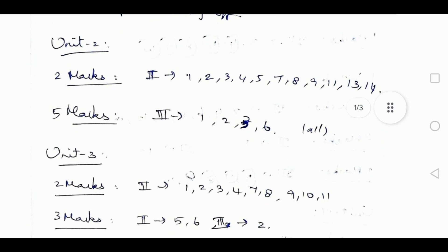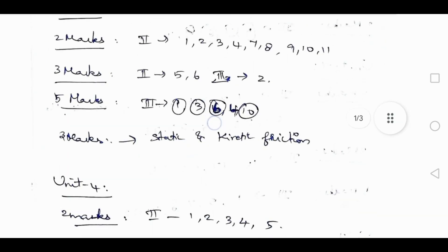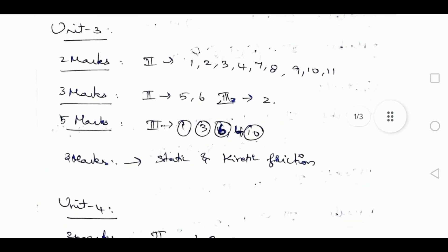Unit 2: 2 mark is 1, 2, 3, 4, 5, 7, 8, 9, 11, 13, 14, and also 5 mark is 3rd rom letter 1, 2, 3, 6. Unit 3: 2 mark is 1, 2, 3, 4, 7, 8, 9, 10, 11. 3 mark is 2. 5 mark is 3rd rom letter 1, 3, 6, 4, 1, 3, 4, 8, 9, 11, 14.